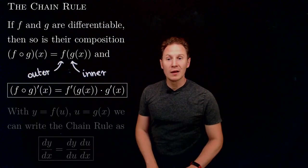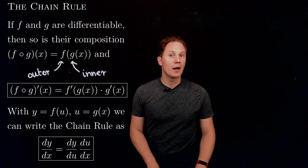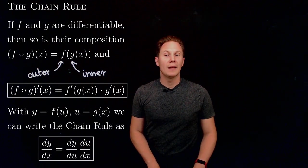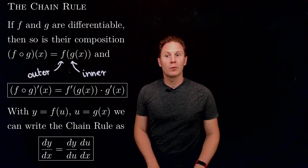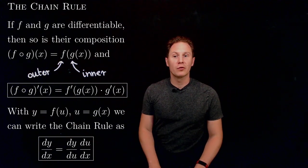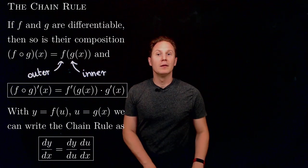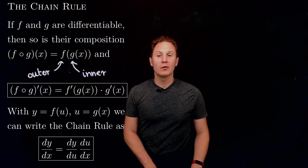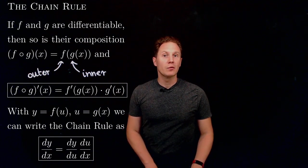Using Leibniz's notation and writing g of x as the variable u and f of u as the variable y, we can express what the chain rule says by writing that the derivative dy over dx equals dy over du times du over dx.